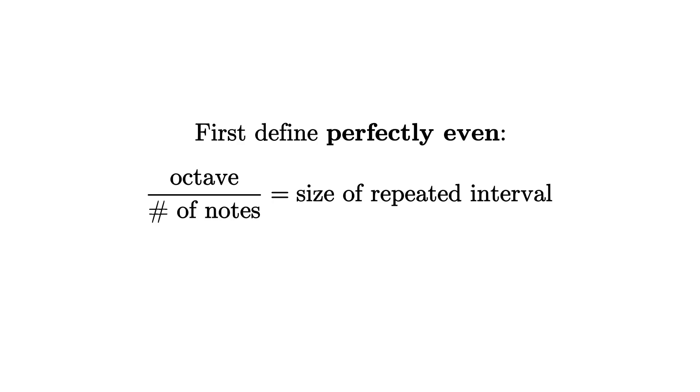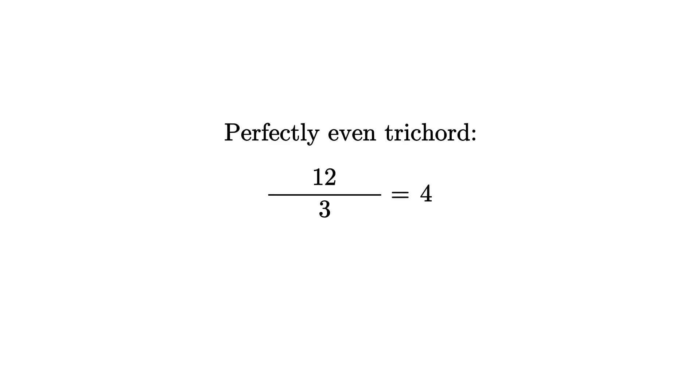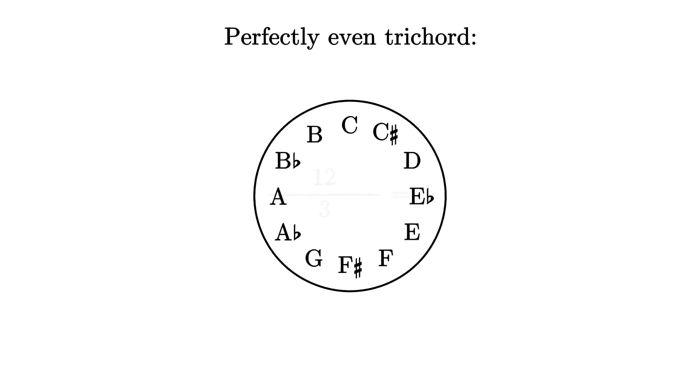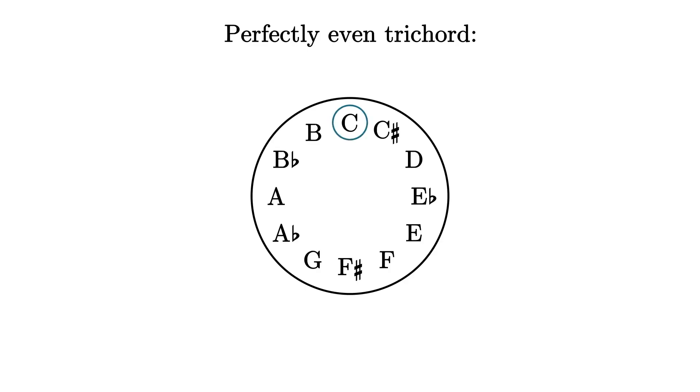For example, for three-note chords, divide the 12 semitones of the octave by three. That gives us the number four, so a perfectly even three-note set should have an interval pattern that goes plus four, plus four, plus four, which of course is an augmented triad.